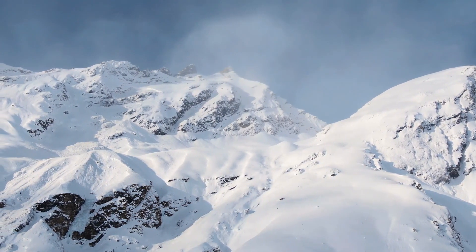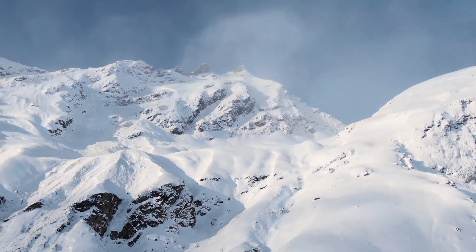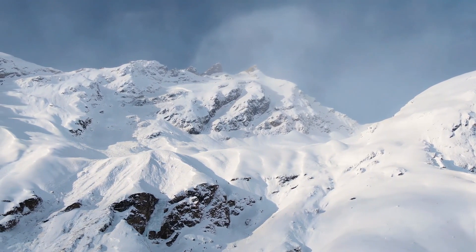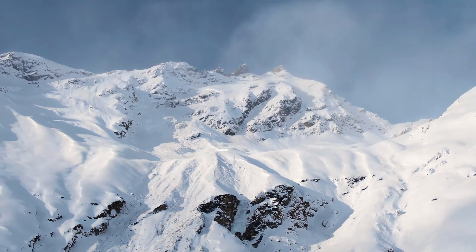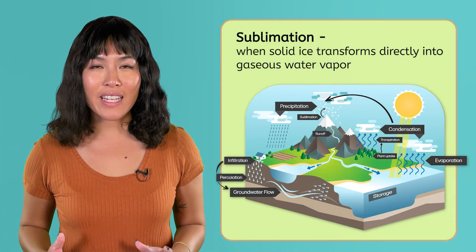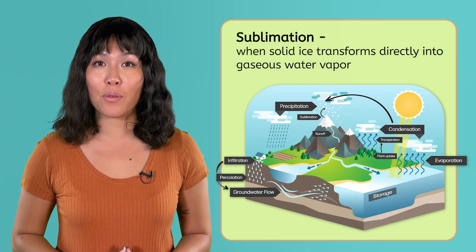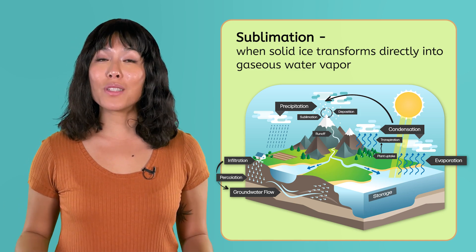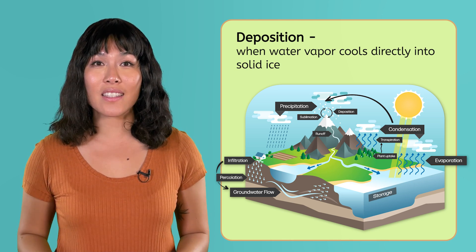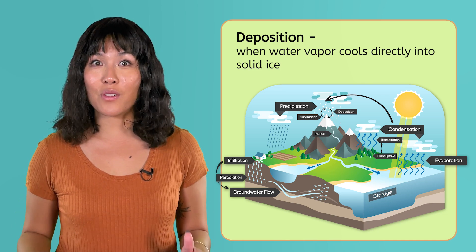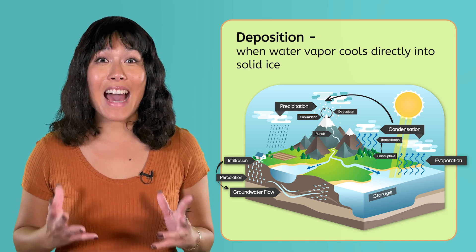There are also some stages of the water cycle that are unique to cold environments, like icy mountaintops. Solid ice that's warmed by the sun can turn directly into water vapor and evaporate without melting into liquid first. When solid ice transforms directly into gaseous water vapor, it's called sublimation. And the reverse can also happen — deposition is when water vapor cools directly into solid ice, without first condensing into liquid water. If you've ever seen frost on the grass on a cold morning, that's deposition in action. Even in the coldest places on Earth, water isn't just trapped in ice; every drop is still an active part of the cycle.